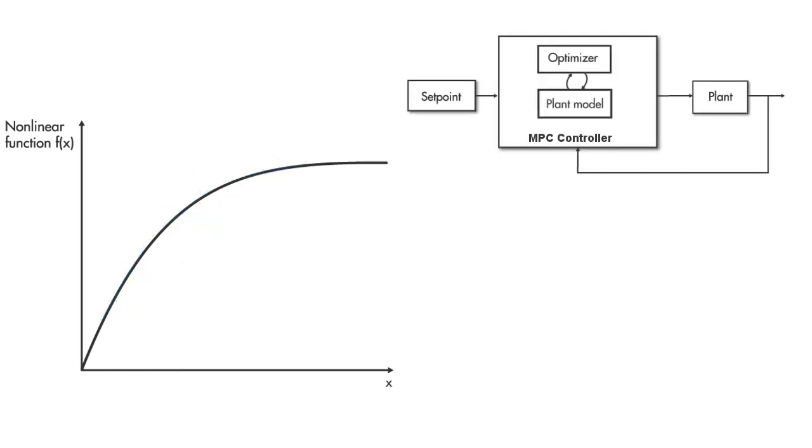This is a regular MPC control diagram that we discussed previously, which uses an internal plant model and an optimizer to compute the control action. In adaptive MPC, a linear model is computed on the fly as the operating conditions change. And at each time step, you update the internal plant model used by the MPC controller with this linear model.